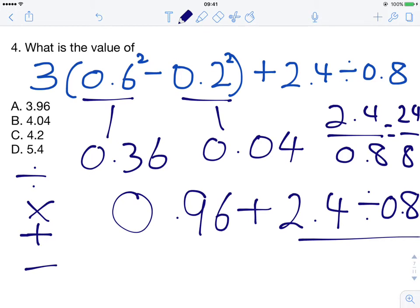We know from our multiplication tables that 8 times 3 is equal to 24. So the answer here to 2.4 divided by 0.8 is 3. So that bit is equal to 3.